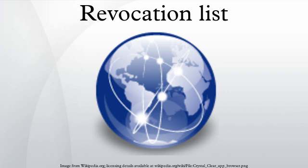Revocation states: there are two different states of revocation defined in RFC 3280. Revoked — a certificate is irreversibly revoked if, for example, it is discovered that the certificate authority had improperly issued a certificate, or if a private key is thought to have been compromised. Certificates may also be revoked for failure of the identified entity to adhere to policy requirements, such as publication of false documents, misrepresentation of software behavior, or violation of any other policy specified by the CA operator or its customer.